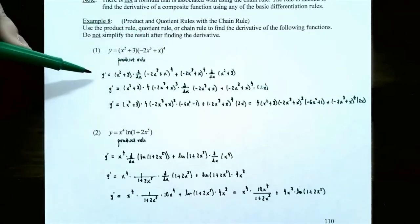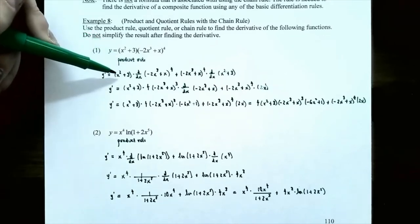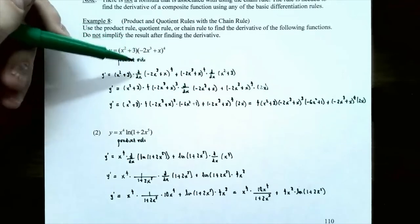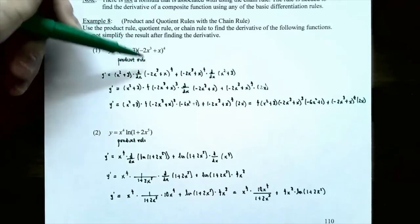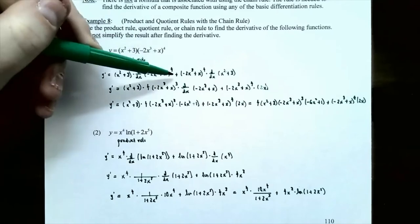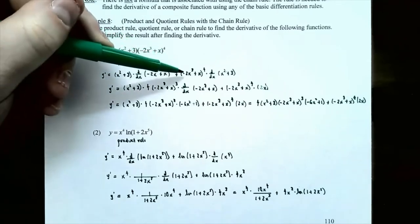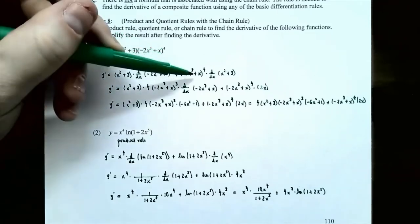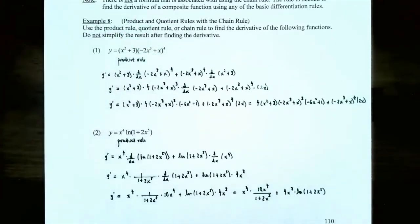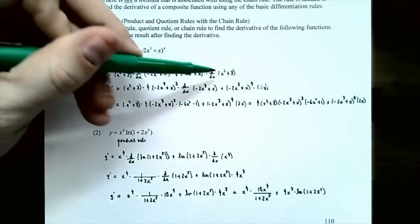To find the derivative, y prime equals — by the product rule — keep the first function the same, x squared plus 3, times the derivative of the second function, d/dx of negative 2x cubed plus x all to the fourth power, plus — because it's the product rule — keep the second function the same, negative 2x cubed plus x to the fourth power, times the derivative of the first function, d/dx of x squared plus 3.